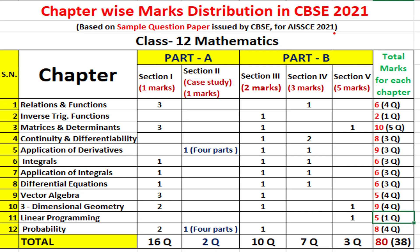Now discussing the topic-wise distribution: the first topic is Relations and Functions. There will be three questions of 1 mark each and one question of 3 marks, making four questions with a total of six marks from this chapter.